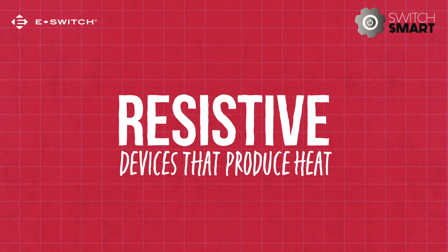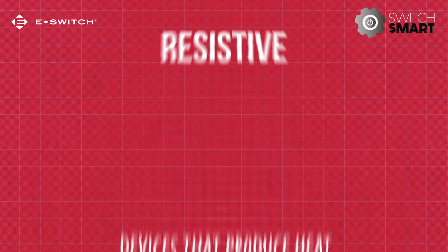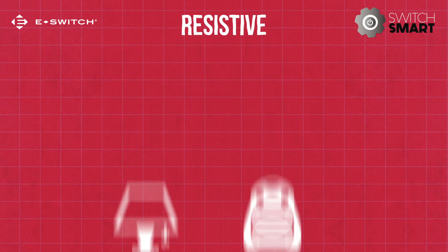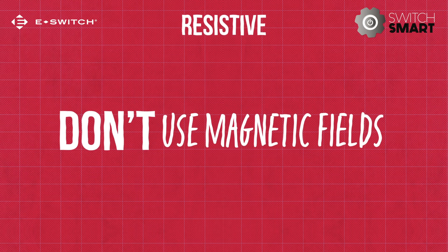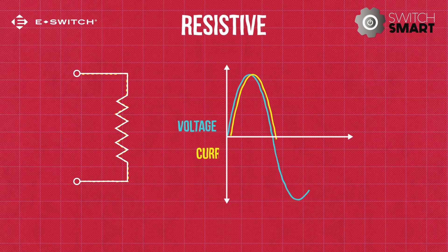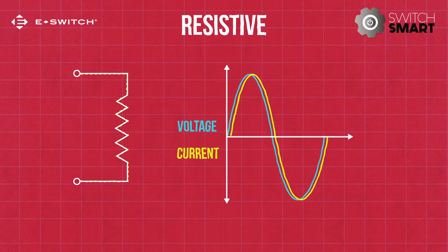Resistive loads are devices that produce heat, such as incandescent light bulbs or space heaters. These loads don't use a magnetic field. Unlike inductive loads, the current in a resistive load peaks at the same time as the voltage. In addition, the current will reach a steady value without first reaching a higher value. Finally, resistive loads dissipate power when energised, which means they don't create a voltage spike when they're switched off.